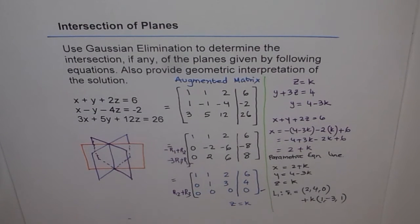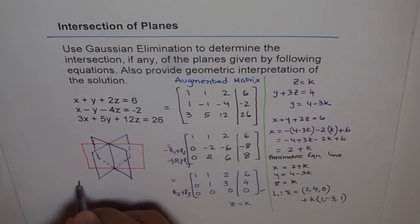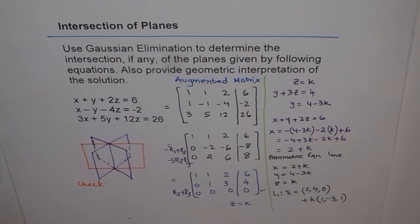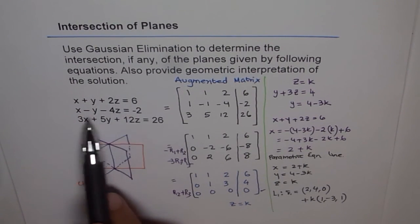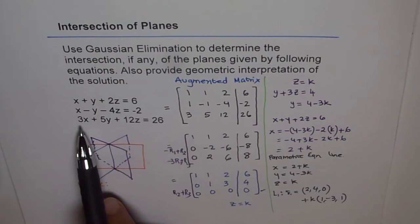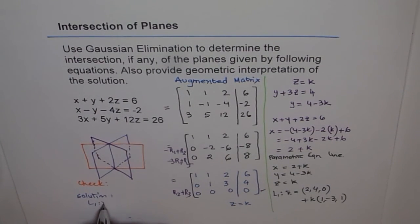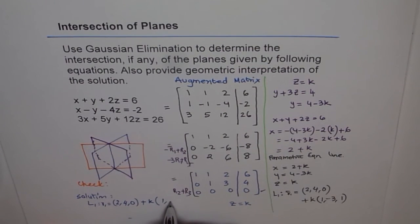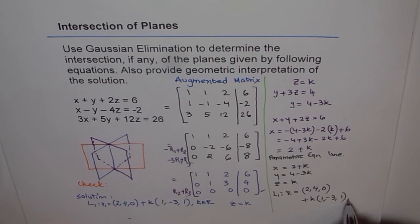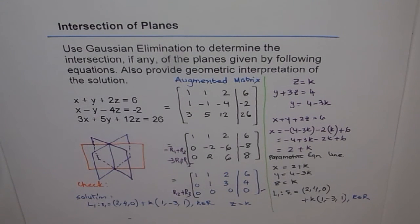We can also check whether we have the right answer. The point of intersection is (2, 4, 0). If I substitute x=2, y=4, z=0 into the first equation: 2 plus 4 plus 0 equals 6 — correct. Second: 2 minus 4 minus 0 equals minus 2 — correct. Third: 3 times 2 plus 3 times 4 plus 0 equals 6 plus 20 equals 26 — correct. The equations are verified. The solution is a line R, which is (2, 4, 0) plus parameter k times (1, minus 3, 1), where k belongs to real numbers.